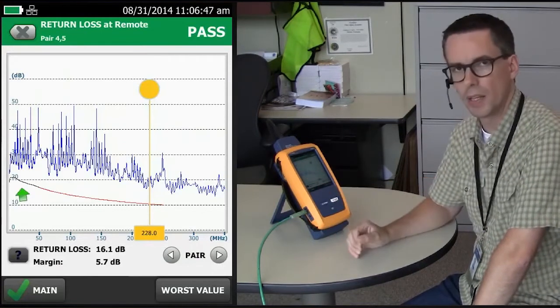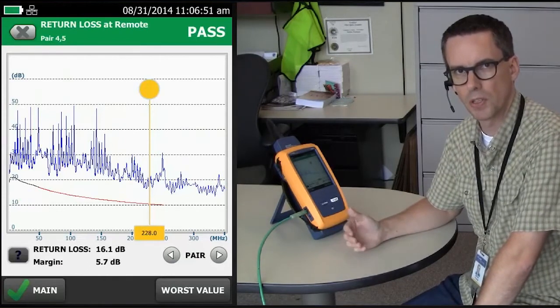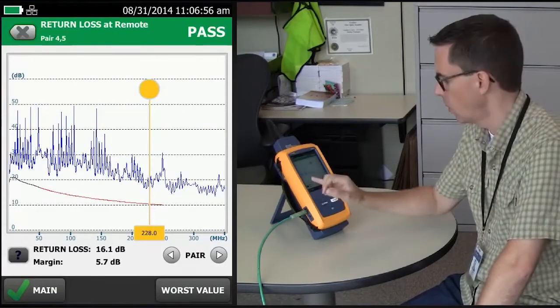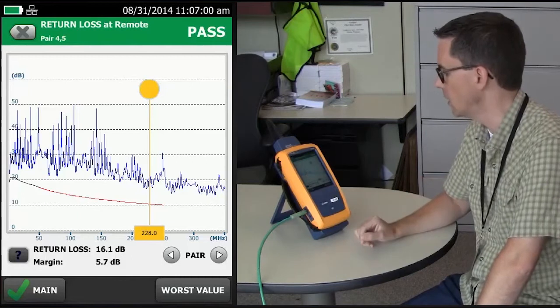Where the limit line is black, that's where the insertion loss is less than 3 dB. And as far as the standards are concerned, we ignore all the measurements where the insertion loss is less than 3 dB, or where the limit line is black.